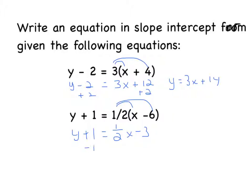I need y by itself, so I have to subtract the 1. So in slope-intercept form, it would be y equals 1 half x minus 4, because negative 3 minus 1 is a negative 4. And that's it.